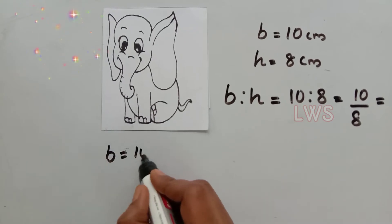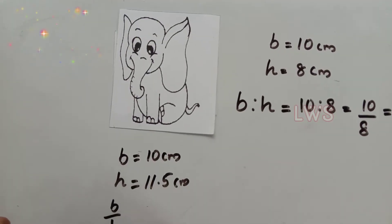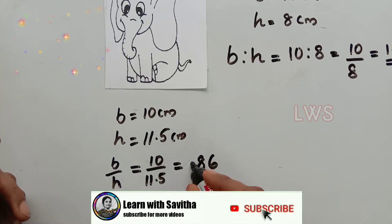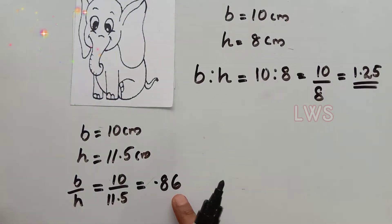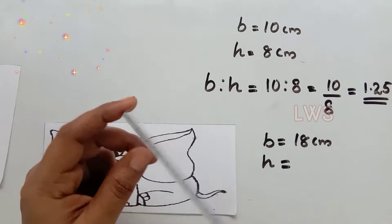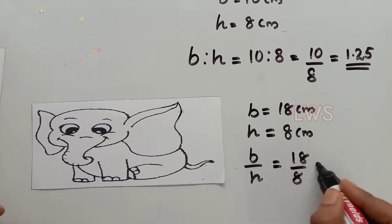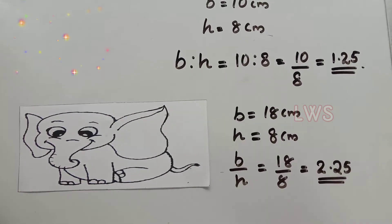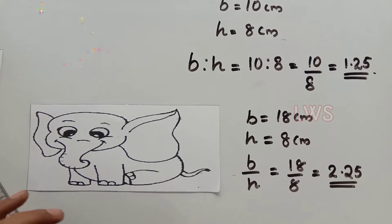Now we calculate the ratios for the other pictures also. Here base is equal to 10 cm and height is equal to 11.5 cm, so base to height is equal to 0.86. Look, it's different from the proportionality constant of the original picture. We calculate the same for the other picture also, and here again we got a different proportionality constant. Since the ratio of base to height is different in both cases, we got distorted pictures.